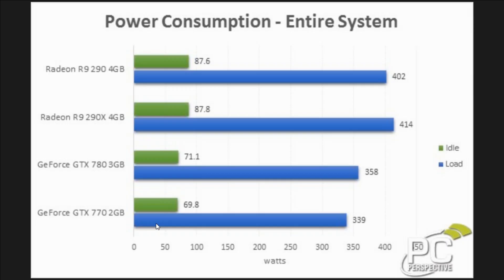We have a lot more power consumption numbers and gaming benchmarks — Bioshock, Skyrim, Grid 2, and more — in our full review, which you can find in the link below. In terms of power consumption, it shouldn't be a surprise that the 290 is performing so close to the 290X and its power consumption is pretty close to matching it. The GTX 780 does have a big advantage in lower power consumption, but it's behind the AMD cards in performance more often than it's ahead.